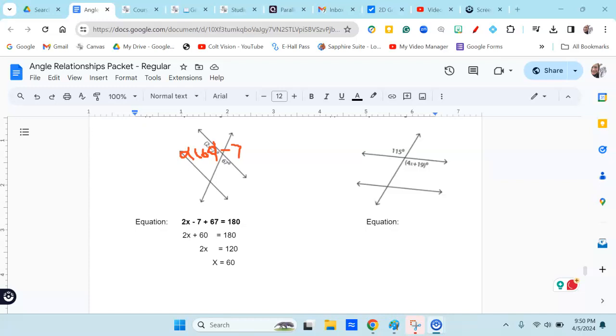So that's the process. You're going to identify the relationship, then write the equation, simplify, solve it, and find the missing angle.